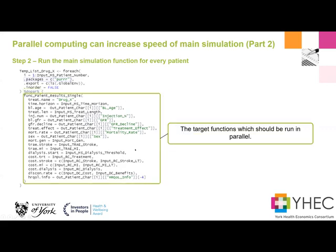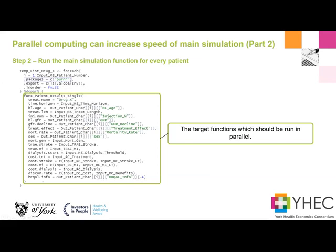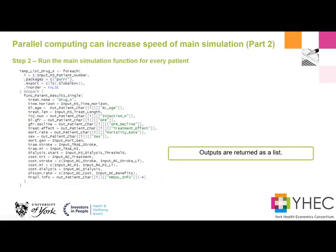This big block of text here is just the function - this is the main logic of my simulation model, taking all the inputs. This is the parent function that contains functions within functions to take all these patient characteristics, model patients over time, and so on. So it's simply just telling foreach where the information can be found, run this function in parallel, and you'll get a list output - similar to the map and lapply functions in the sense that it returns a list.